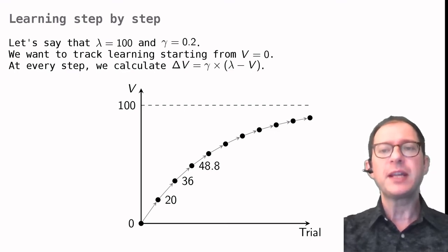This gives the RW learning curve its characteristic appearance of starting fast and then slowing down. We saw earlier that this is fairly typical of Pavlovian conditioning, and it's one of the things that we would like to understand.